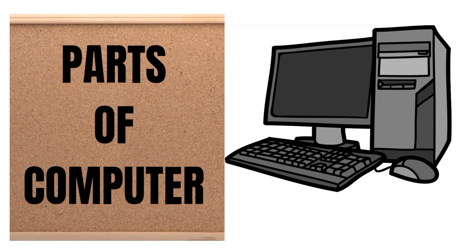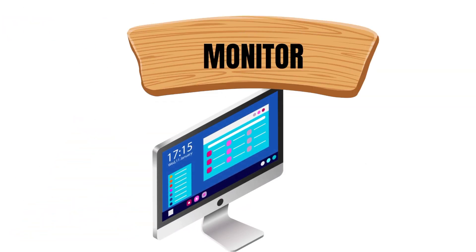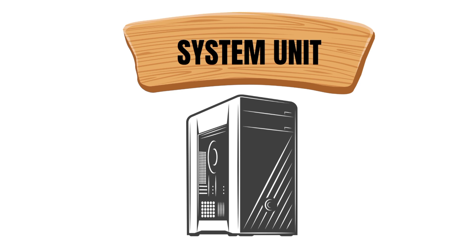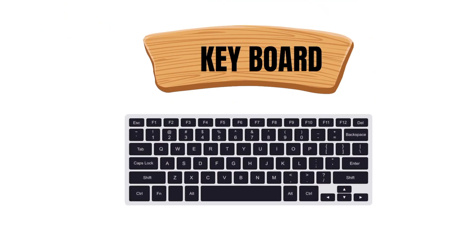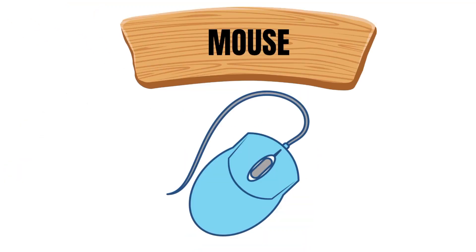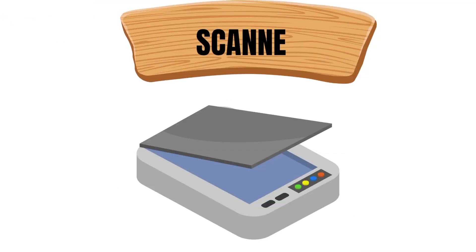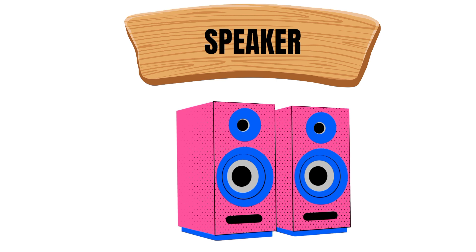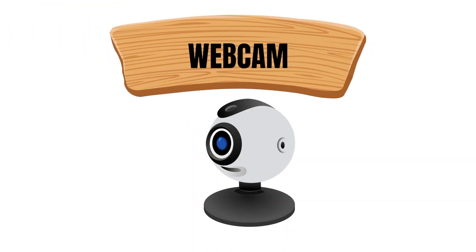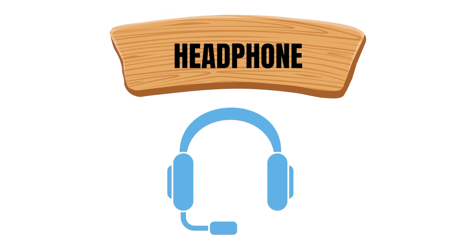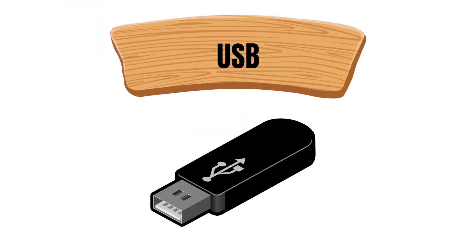Parts of a Computer. Monitor. System Unit. Keyboard. Mouse. Printer. Scanner. Speaker. Webcam. Headphone. USB.